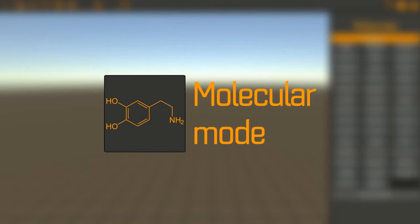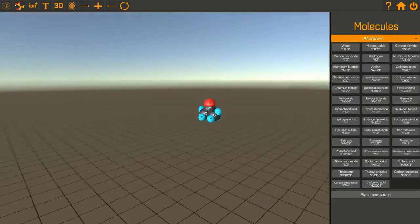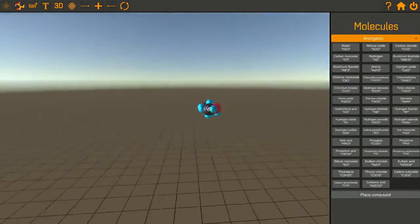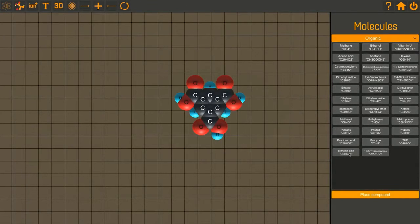First, there's a molecular mode. Here you can easily visualize many pre-built molecules like water, methylamine, or acetone, as well as 2D molecules like trimesic acid.